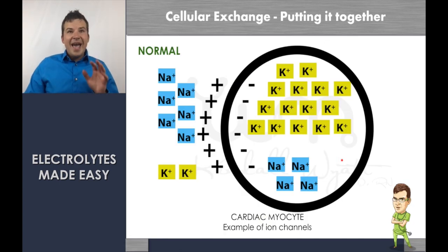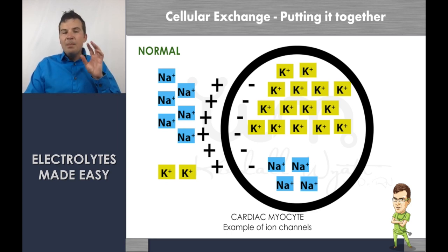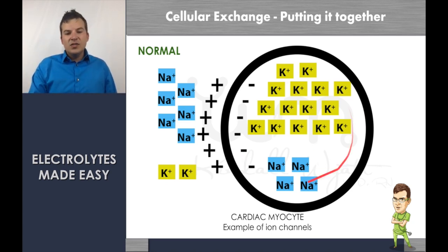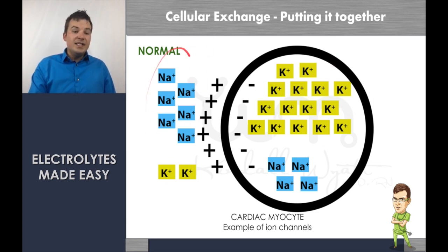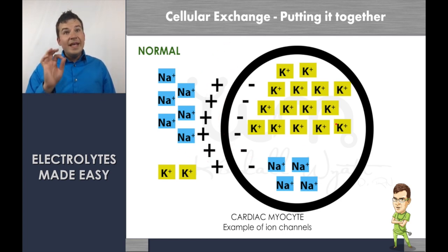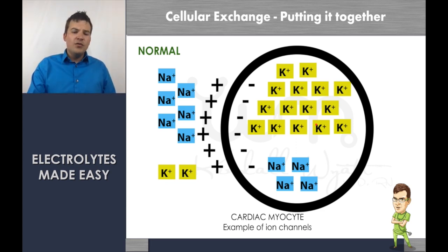Before jumping into the actual electrolytes, we'll revisit some physiology of membrane potentials at the very end. When looking at cells — using a cardiac myocyte as our example — the inside of the cell is negative and the outside is positive. The ECF volume is outside the cell. We'll go over how channels work with different electrolytes at the end to show how it all comes together.